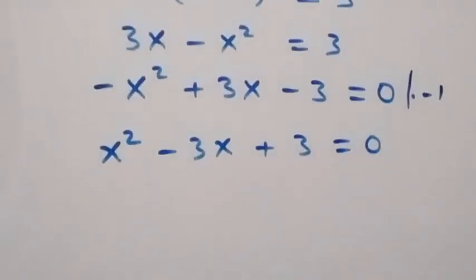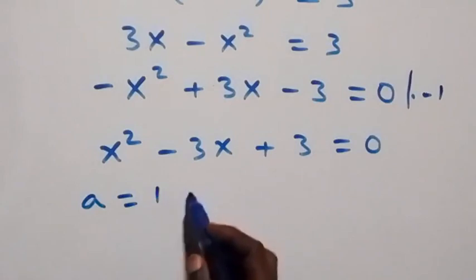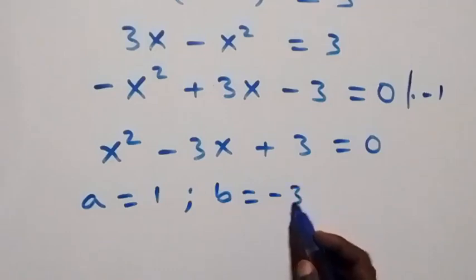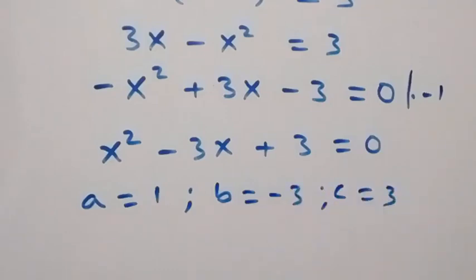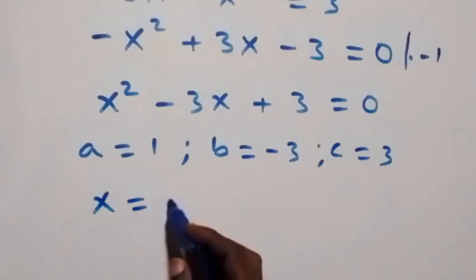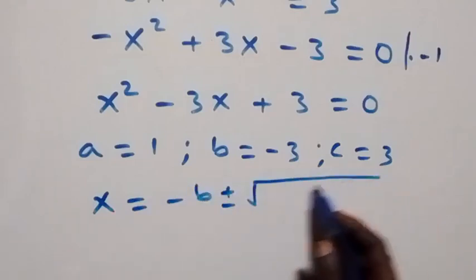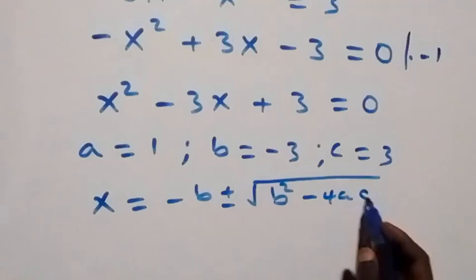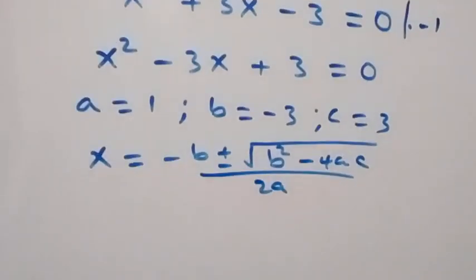We have a quadratic equation where a equals 1, b equals minus 3, and c equals 3. From the quadratic formula, x equals minus b plus or minus square root of b squared minus 4ac, all over 2a.